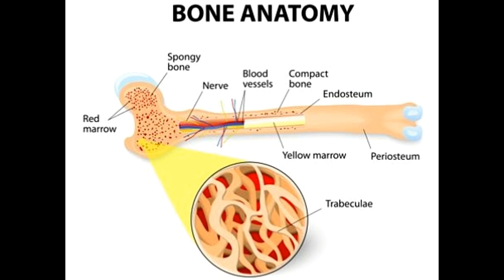About 80% of the human skeleton comprises compact bone, while the rest is made up of spongy bone. This clearly indicates that the majority of the weight of the skeleton is concentrated in the compact bone. No wonder it is considered to be the heaviest among the different types of bones. On the other hand, the porous nature of spongy bones makes them lightweight.